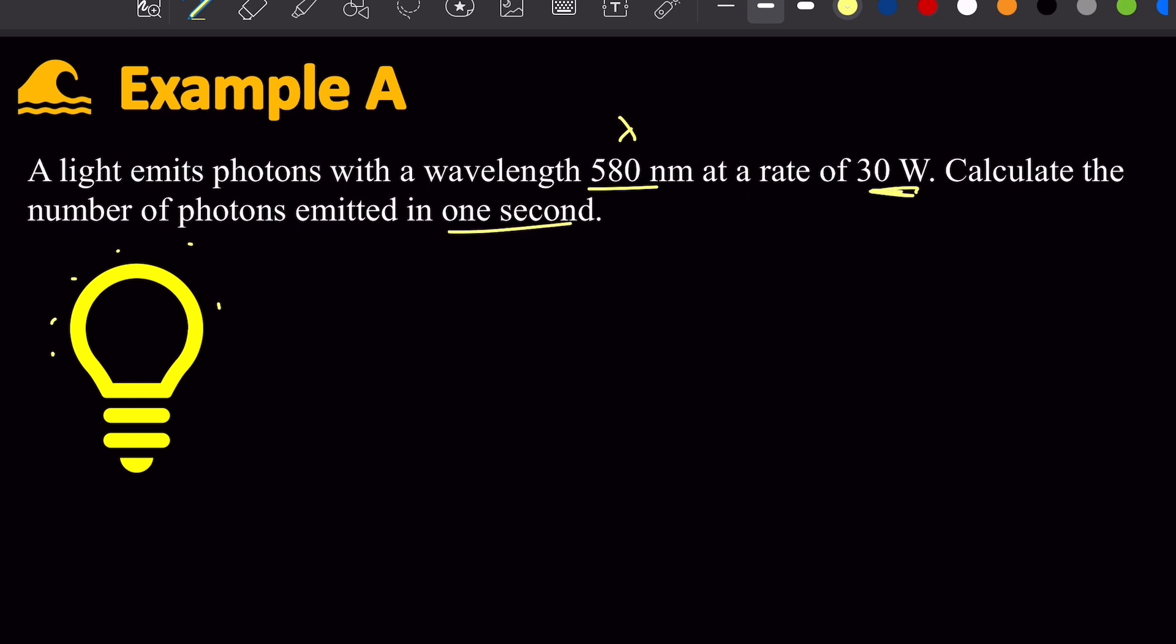So 30 watts here, that's a value of power. Power is energy over time. So 30 watts is going to be 30 joules in one second. So it's asking to find the number of 580 nanometer photons to make up 30 joules.